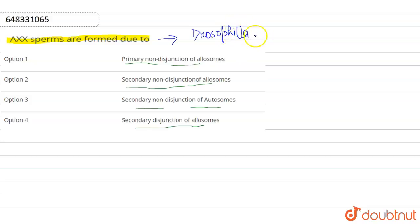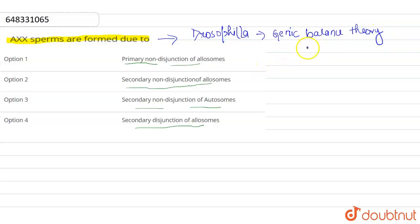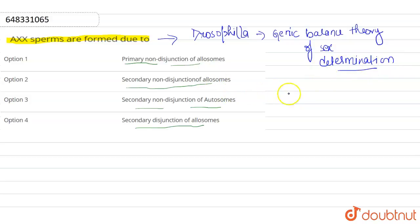This condition is seen in Drosophila. It relates to the genic balance theory — the genic balance theory of sex determination — which was given by Calvin Bridge.